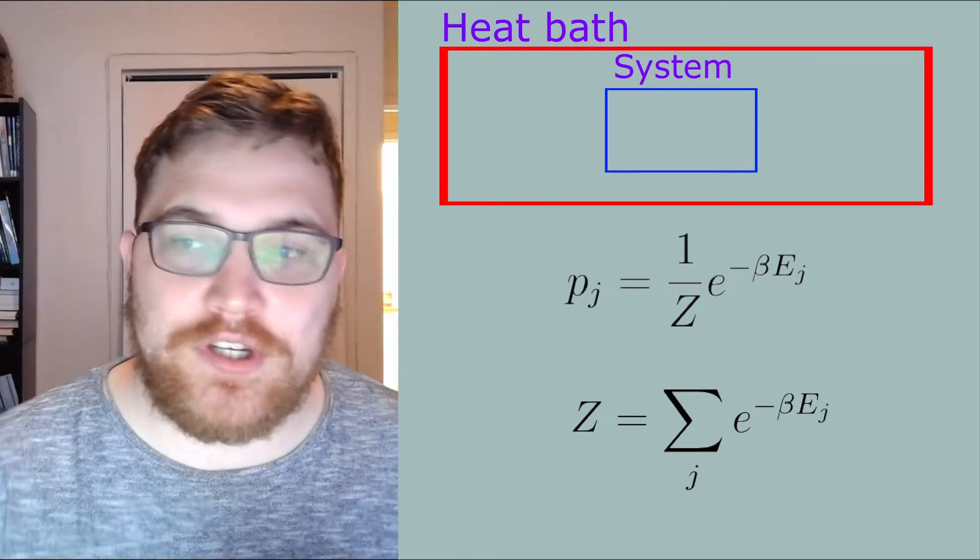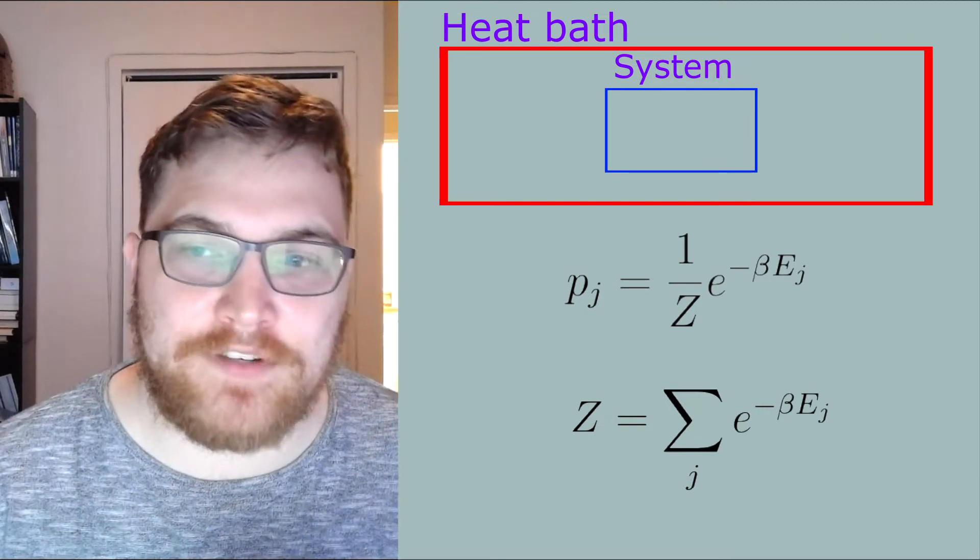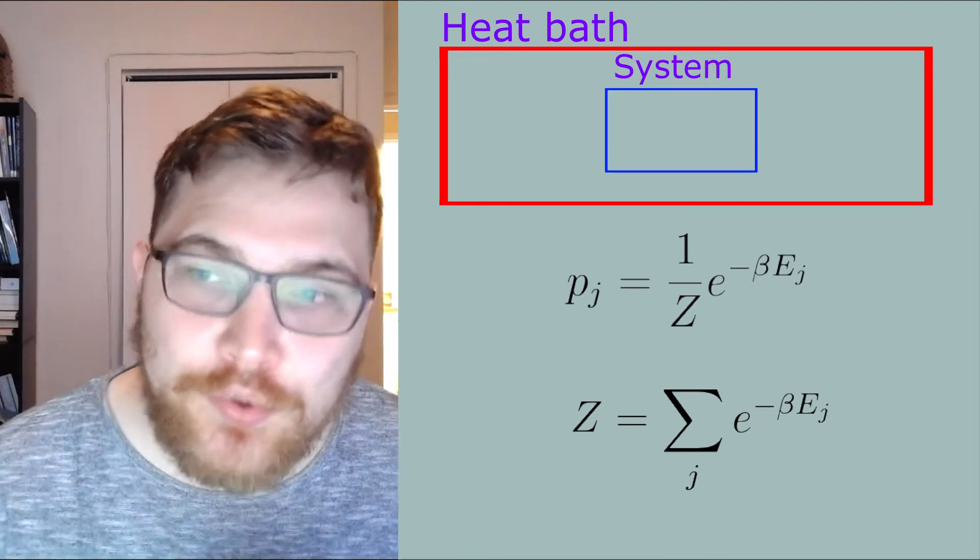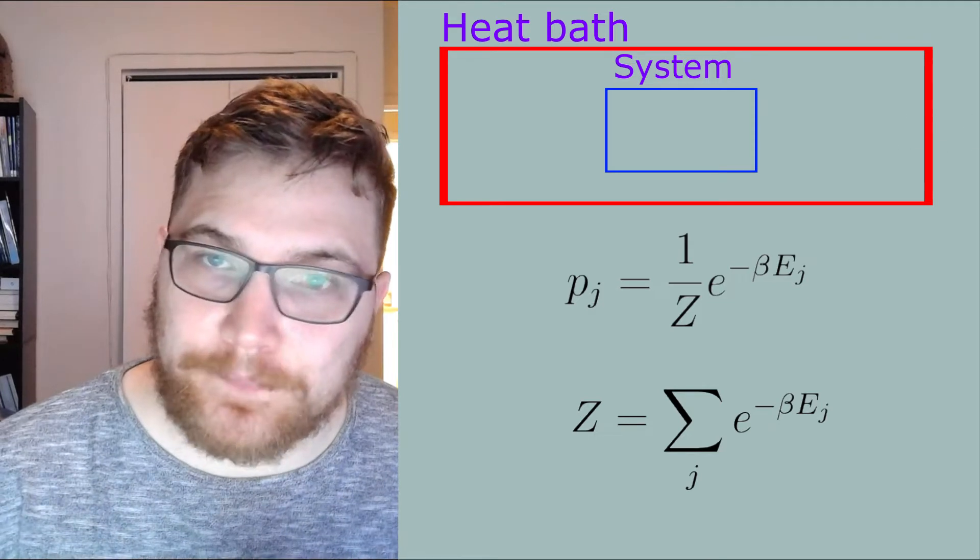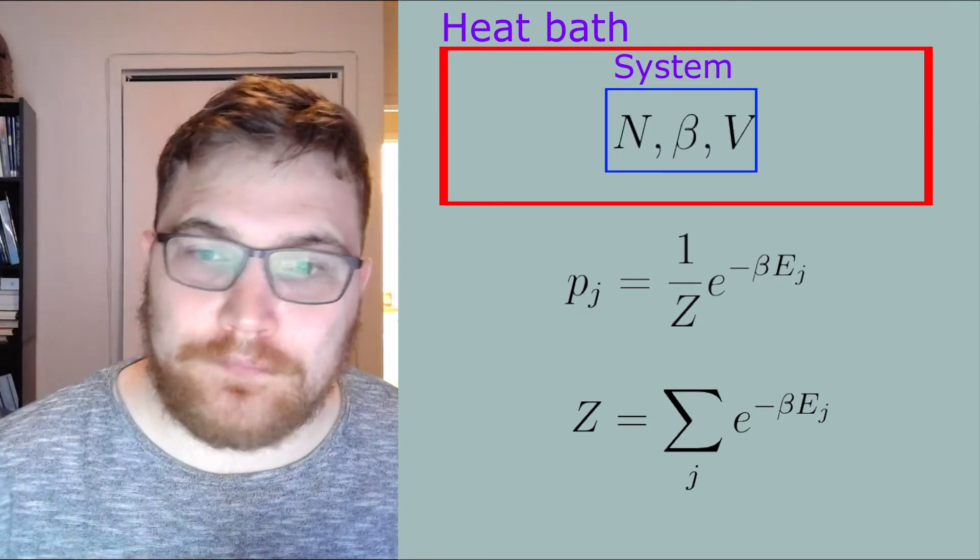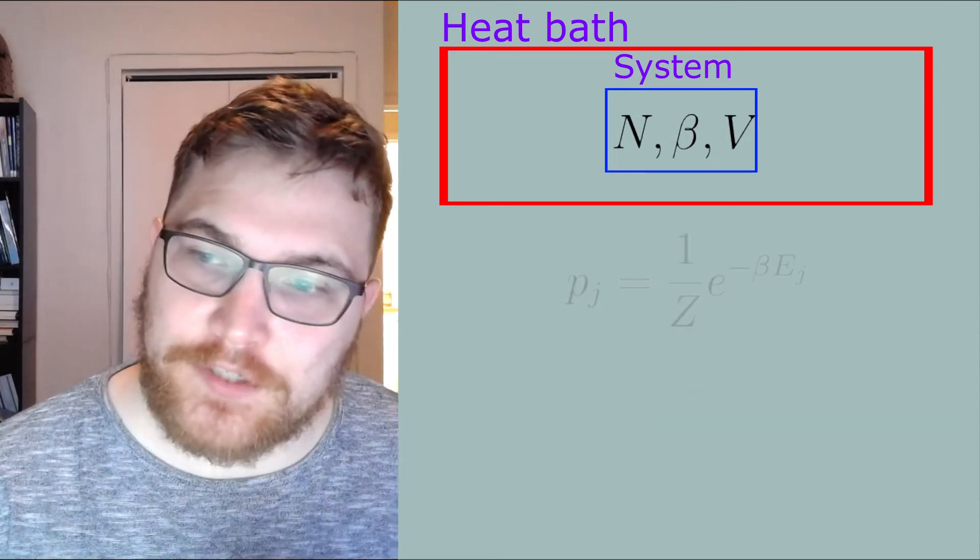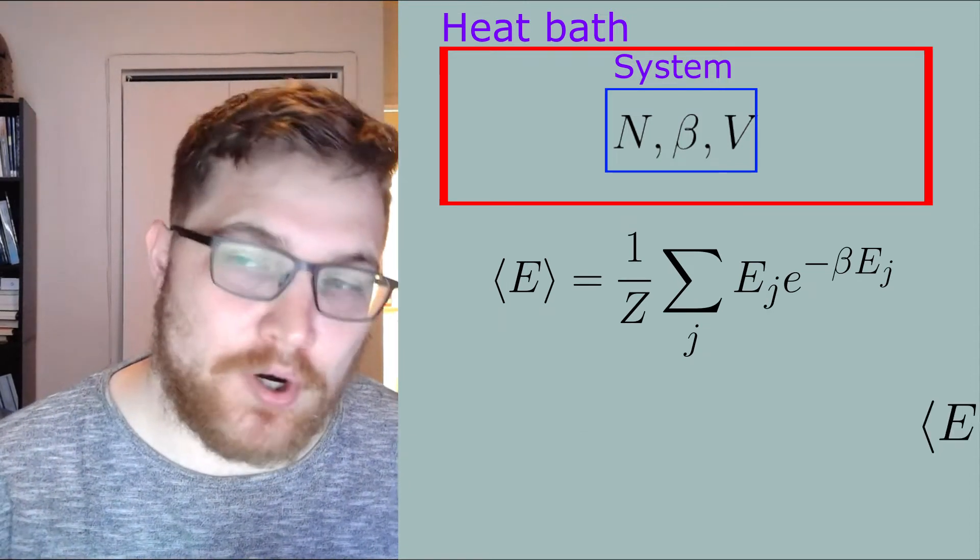Since our system can exchange energy with the heat bath, energy is no longer completely constant and instead we will have some variation or fluctuations in the energy. So our new thermodynamic variables will be the particle number, the inverse temperature beta, and the volume.